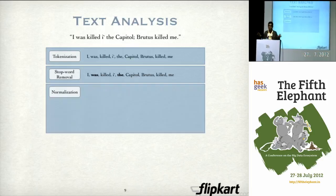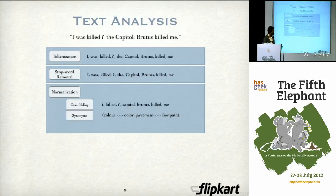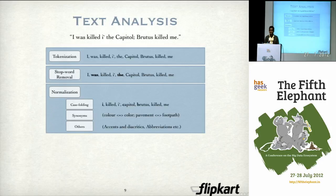Then we go ahead and do a whole bunch of things collectively referred to as normalization. This could be something as simple as case folding, wherein we lowercase all the words. It could be using a synonyms database to make sure that different forms of a word match — for example, 'color' is spelt differently in America versus Britain, or 'pavement' versus 'footpath.' We also do abbreviation normalization — 'U.S.A.' and 'USA' should match each other. There are various other kinds of normalizations, including using phonetics.